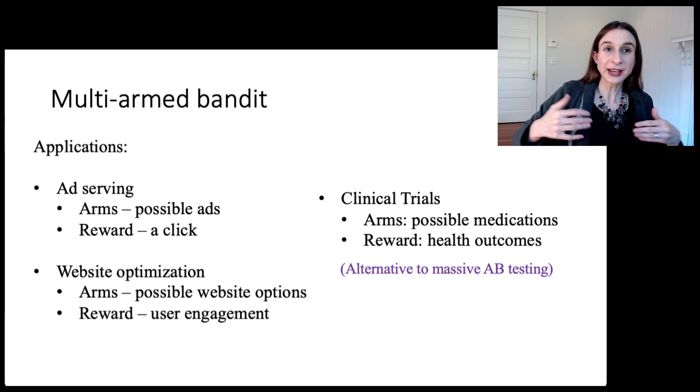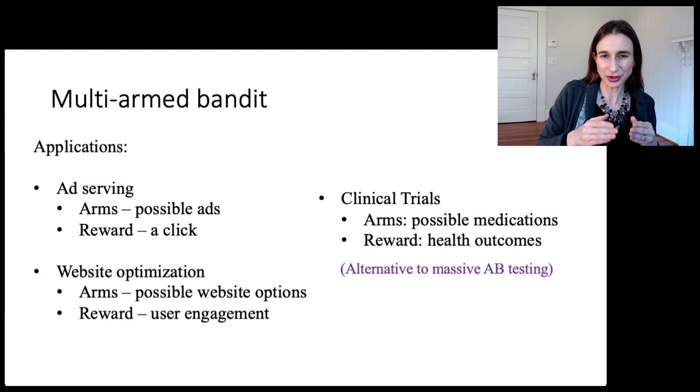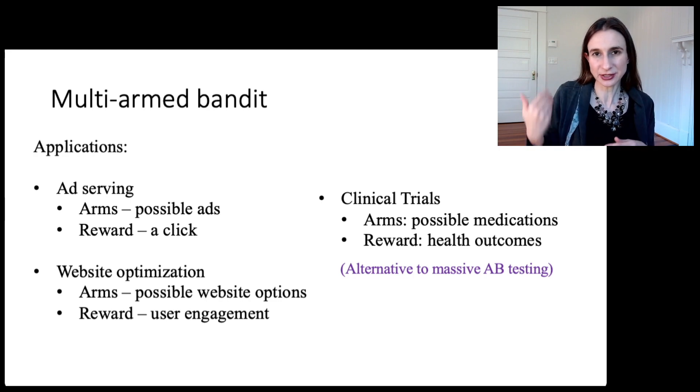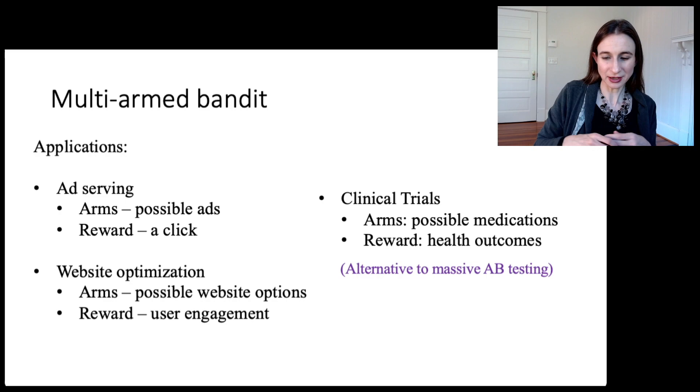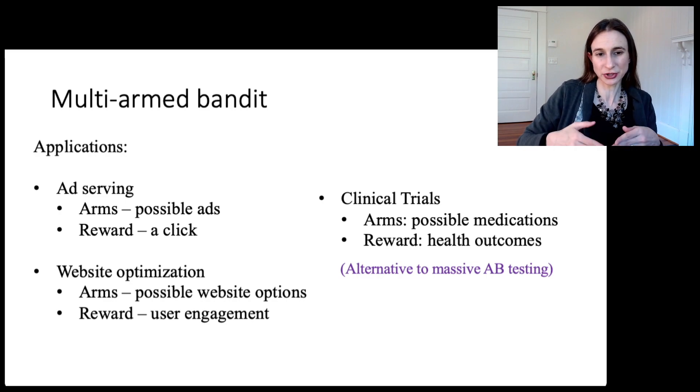Instead of waiting till the end of the trial to do all the pairwise comparisons, if you figure out early on that a drug isn't working, you can exclude it. And then you can have more trials for drugs that seem to be potentially working well.